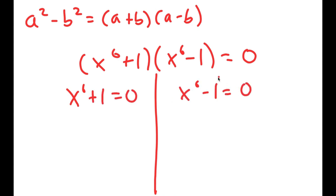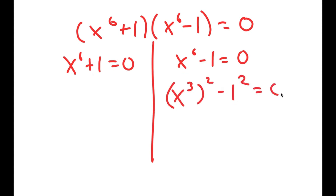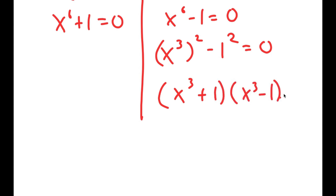This gives me two equations: x to the power of 6 plus 1 equals 0, and x to the power of 6 minus 1 equals 0. I'm going to do the same thing again — I'll rewrite x to the power of 6 minus 1 as x to the power of 3 to the power of 2 minus 1 squared equals 0, so I can use the difference of squares property again and get x to the power of 3 plus 1 times x to the power of 3 minus 1 equals 0.